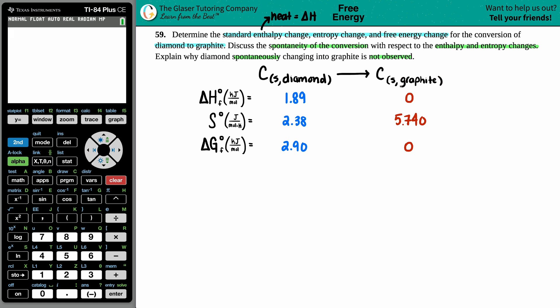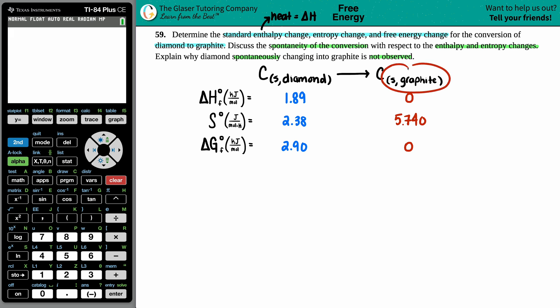Graphite on the other hand is also tons and tons of carbon — it's your pencil lead. So whenever you write with a pencil, the lead that comes out is graphite. We're saying that diamond can turn into graphite, so a diamond, a girl's best friend, can turn into a pencil.